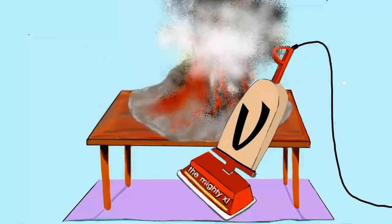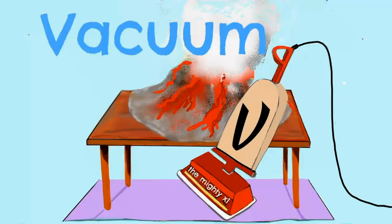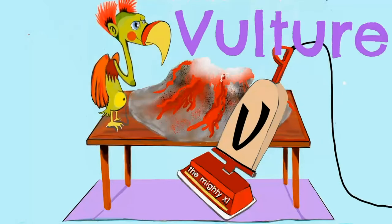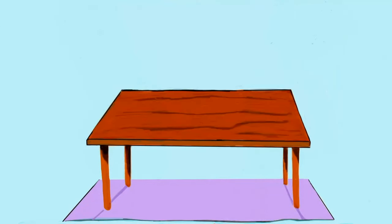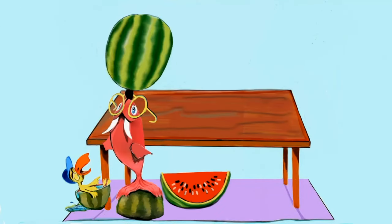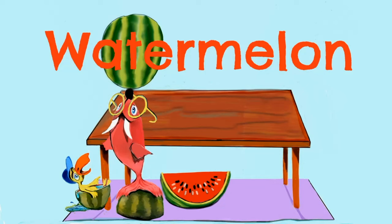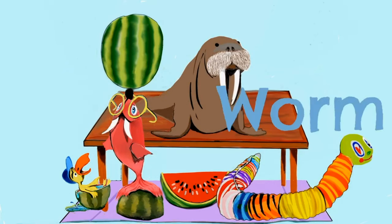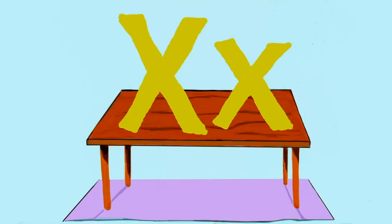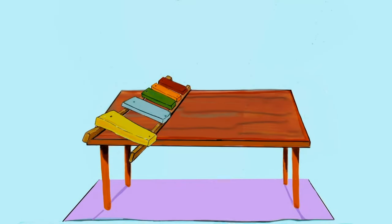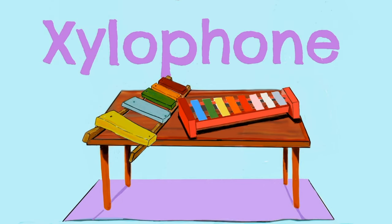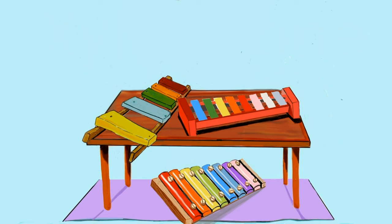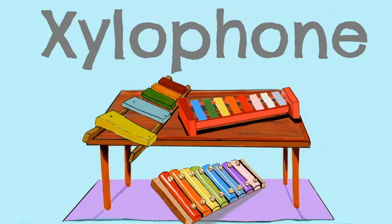The letter V — volcano, vacuum, and this is our friend Iggy the vulture. Next is the letter W — Elton trying to balance a watermelon on his nose. We've got a walrus and a worm. Next is the letter X — xylophone. Three xylophones!